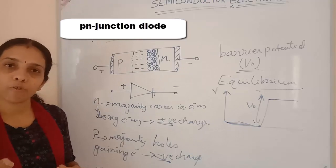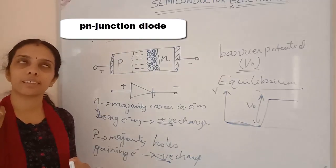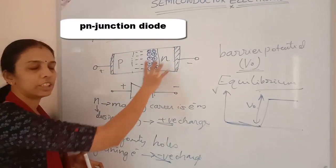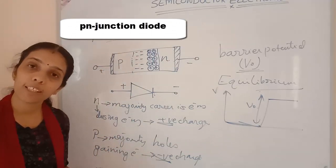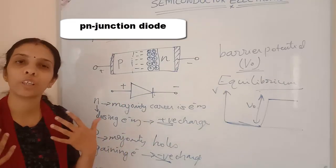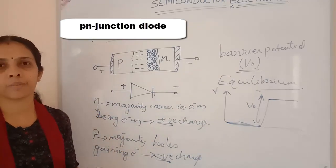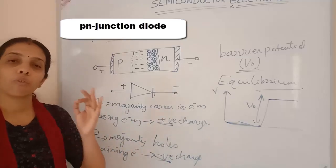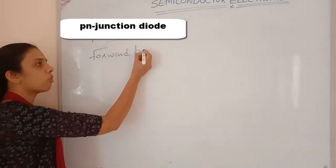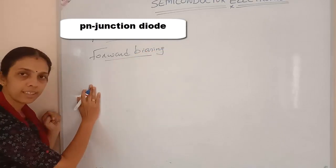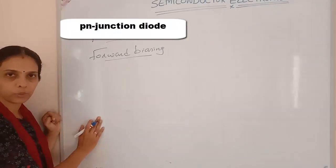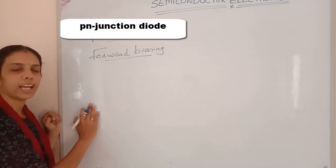In forward biasing, with the help of external voltage, electrons can cross the potential barrier. If we connect the positive terminal to the P region and the negative terminal to the N region, this is forward biasing. The external voltage helps electrons from the N side come to the P region.